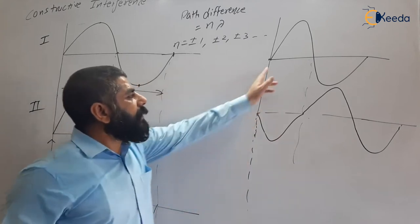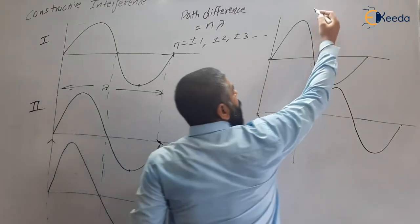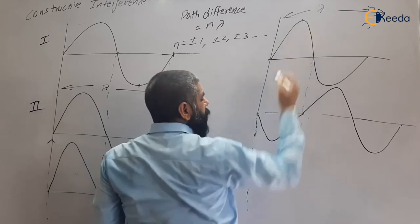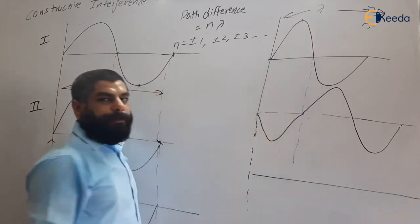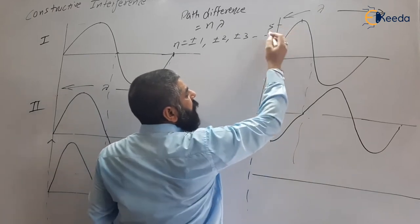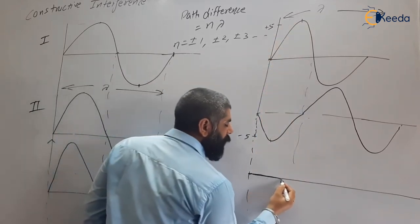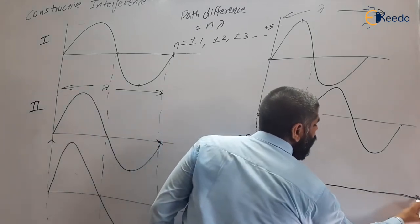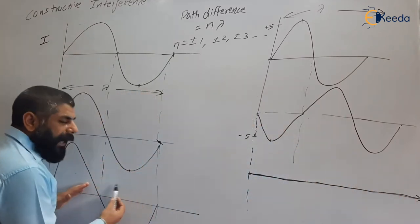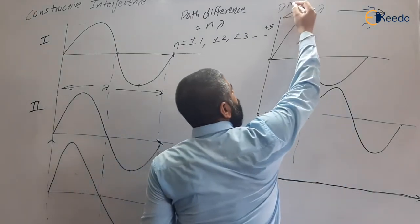When the path difference is lambda by 2, the phase difference is 180 degrees. When we superimpose these two waveforms, this one is at maximum while the other is at minimum. For example, if one is plus 5 and the other is minus 5, adding them gives zero. The resultant waveform is completely zero — completely dark. This type of interference is called destructive interference, where brightness is decreased.